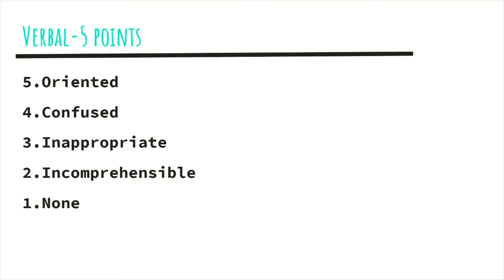Now let's go into the second part of the scoring which is the verbal portion, and you can score up to five points here. At the top, for five points, is oriented, which means that the patient is essentially alert and oriented times four. These include person, place, time, and situation, and very importantly, they are speaking in complete coherent sentences.